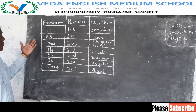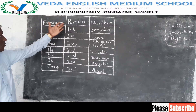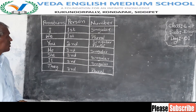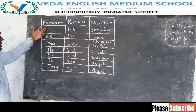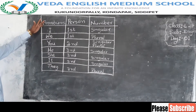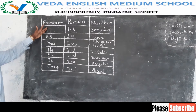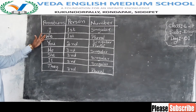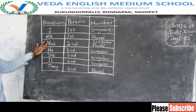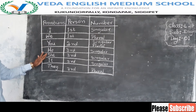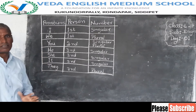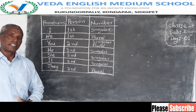There are also persons and numbers. We are always seeing: I, we, you, he, she, it, and they. They are the pronouns.